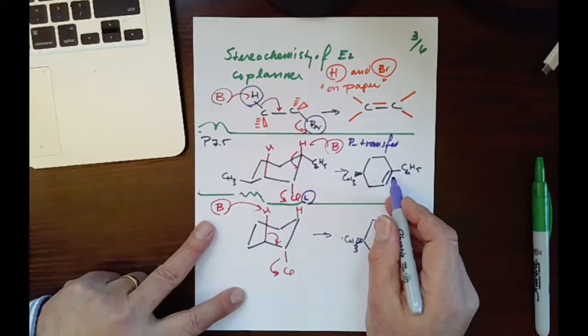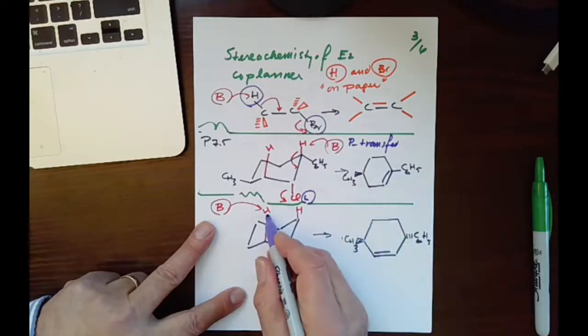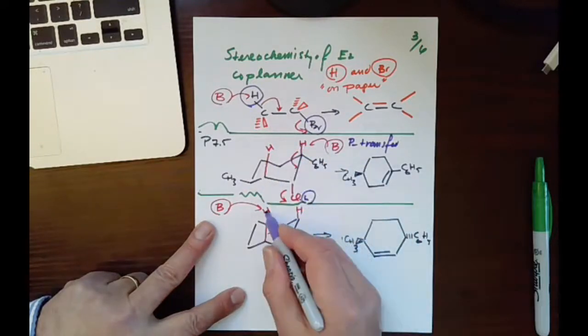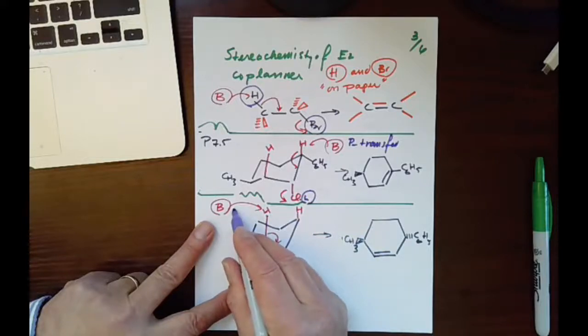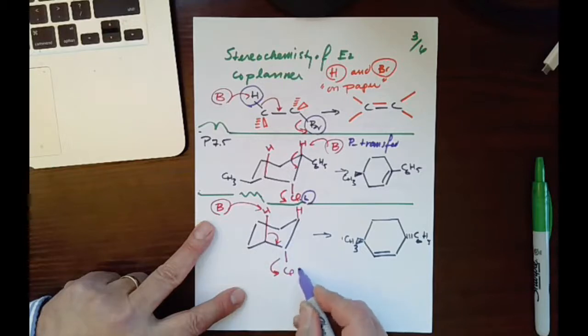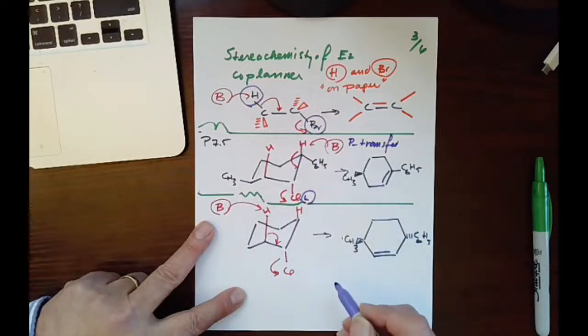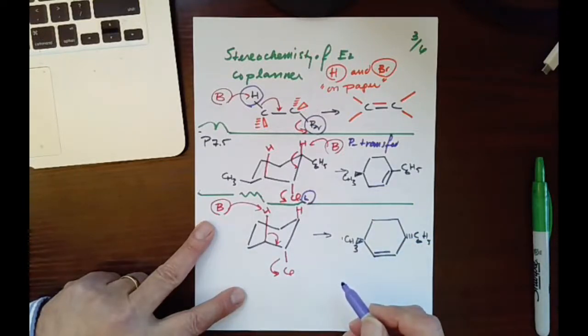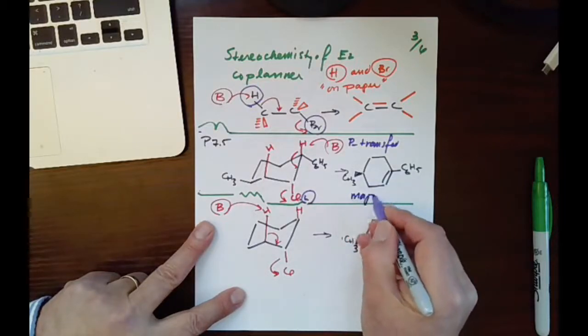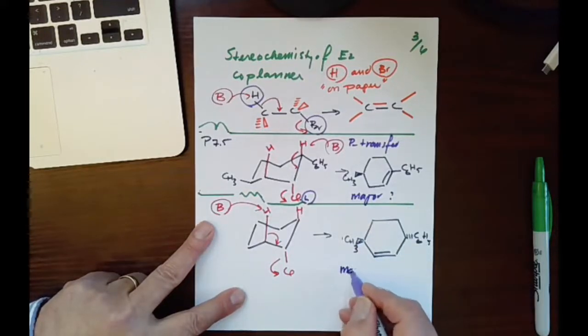Now if you think about other Hs that we have, we have two Hs that are opposite to the Cl. Both these Hs are opposite to Cl. Now if you remove this H with this base, then the double bond forms here and the leaving group is here, so it makes a different product. So we have two different products, and we have to ask ourselves which would be the major. Is this going to be the major, or is this going to be the major product?